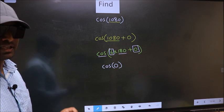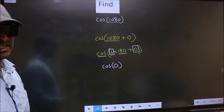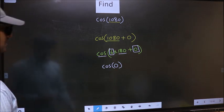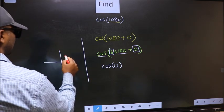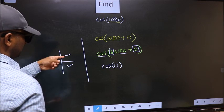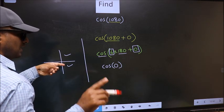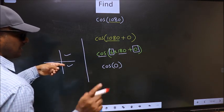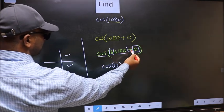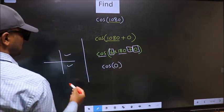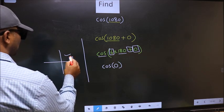And all the even multiples of 180, they lie in either the first or the fourth quadrant. So now, to select the quadrant, we should look at this symbol. Here we have plus. That means angle lies in the first quadrant.